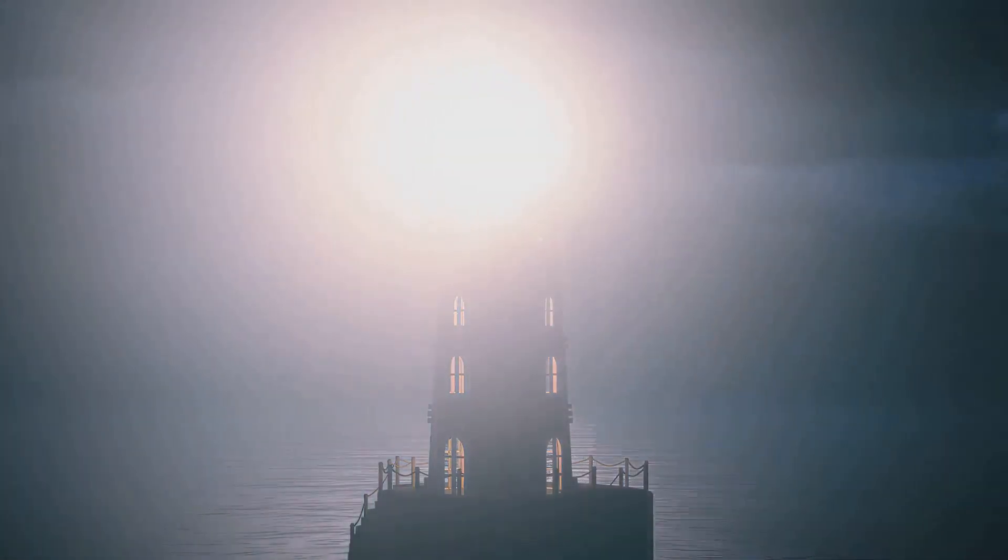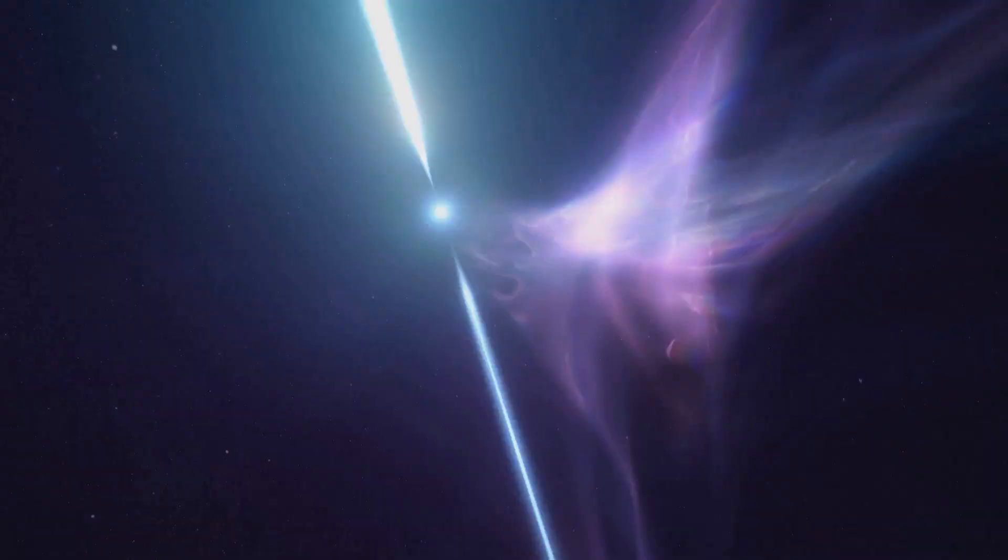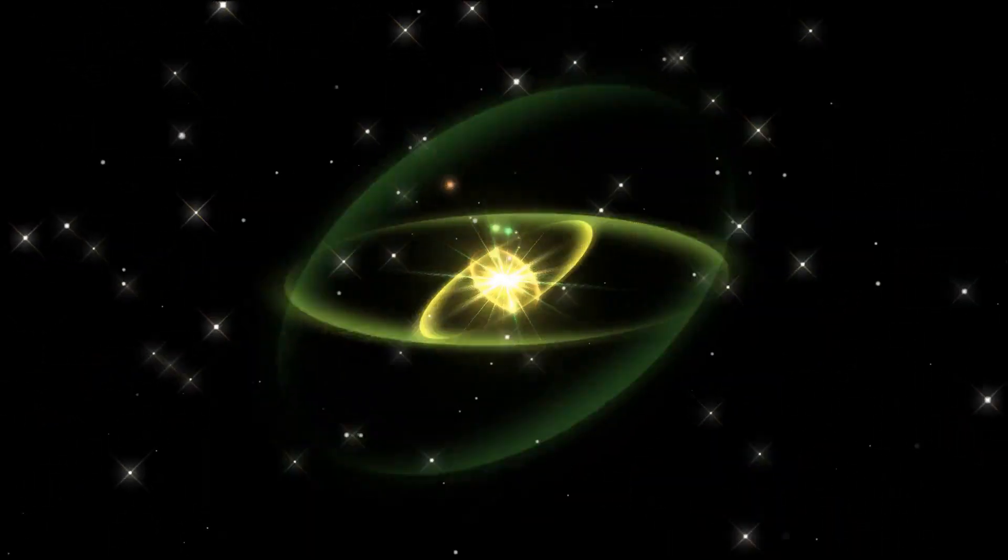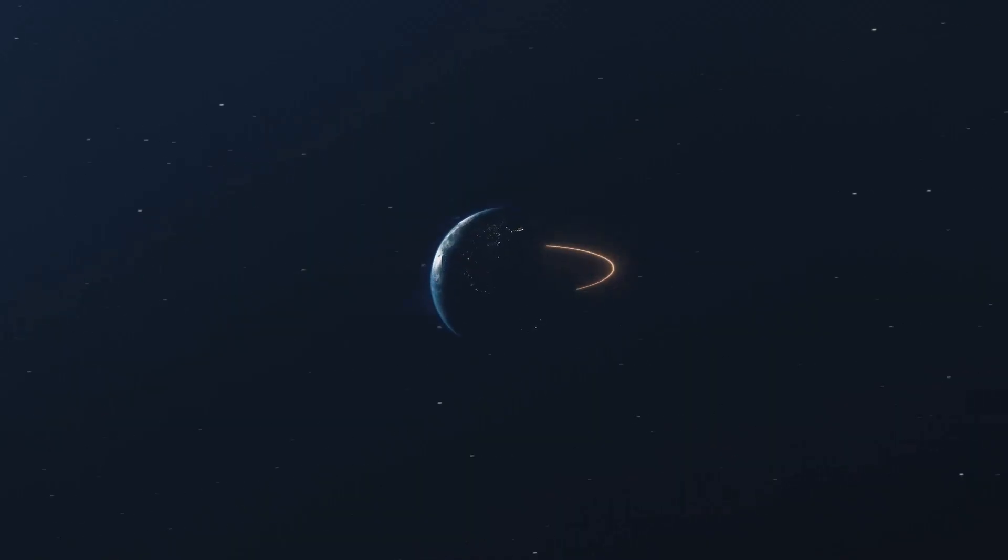Imagine a lighthouse in space, its light sweeping across the darkness. That's a pulsar, a spinning star that sends out beams of energy. Now picture a giant magnet so strong it could bend space itself. That's a magnetar, a type of star with a super strong magnetic field.